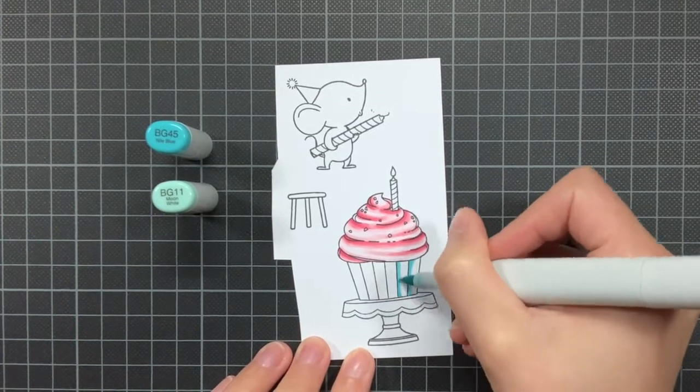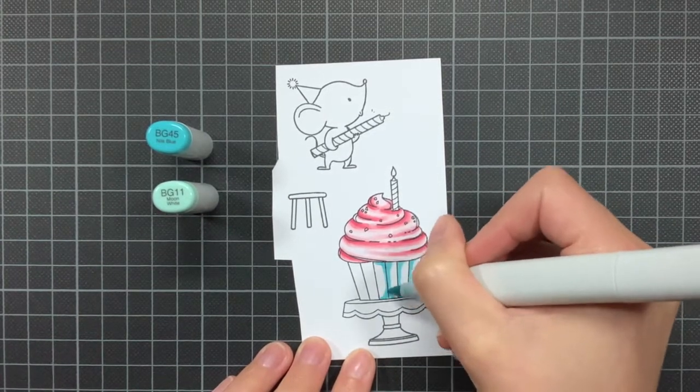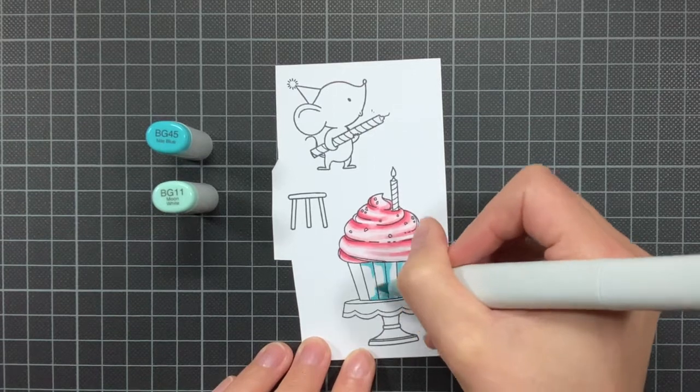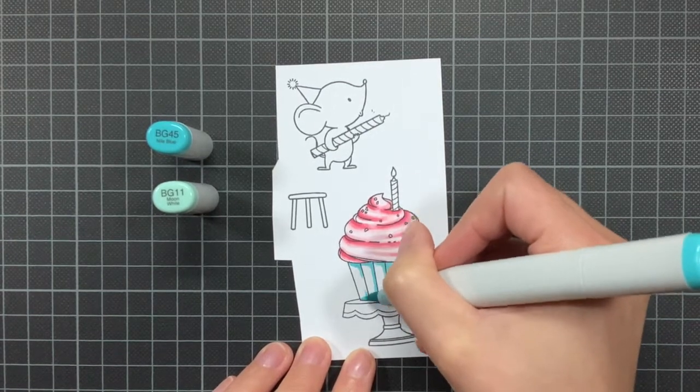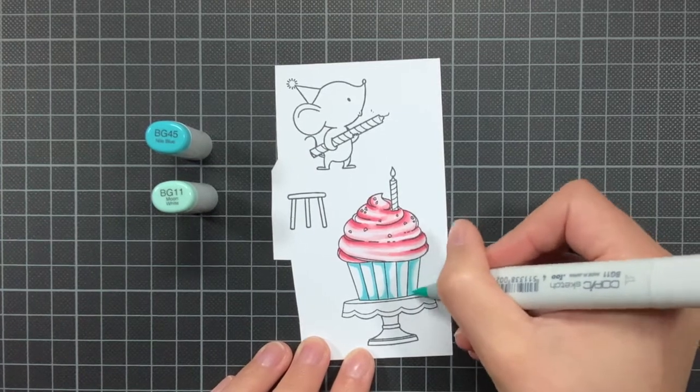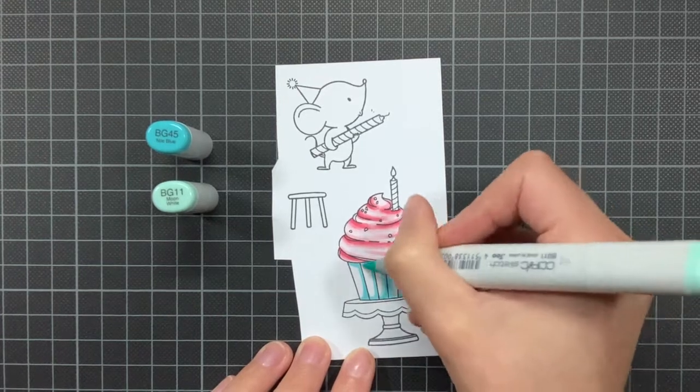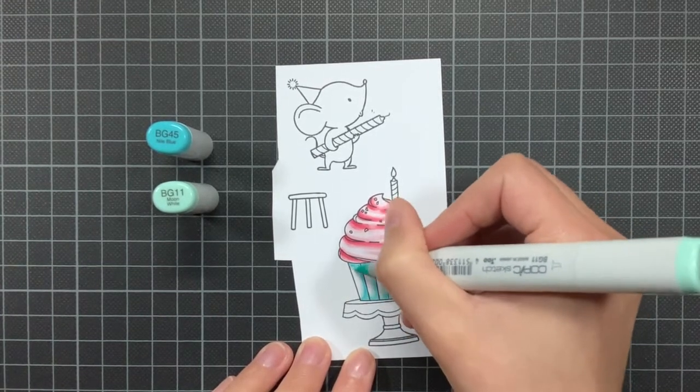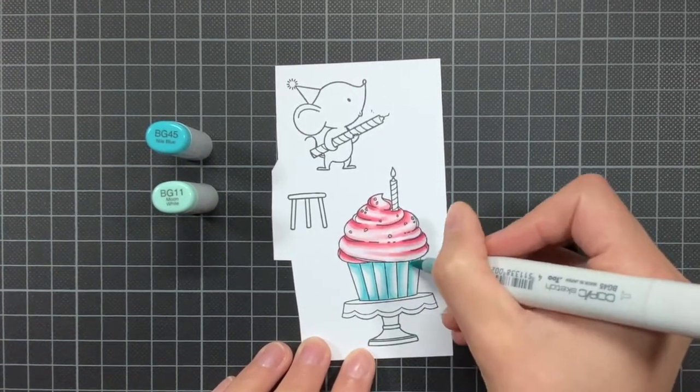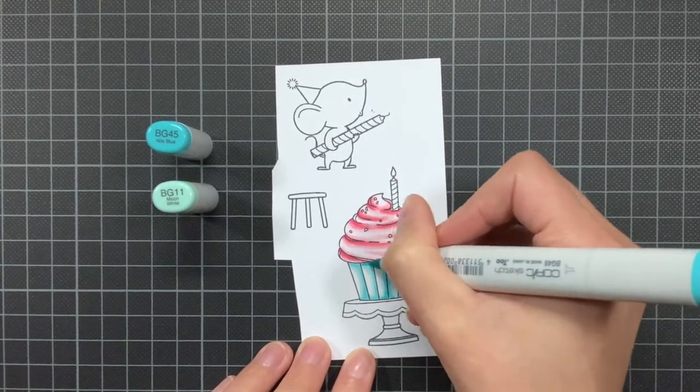Let me now demonstrate this with the wrapper for the cupcake. So first I am using the BG45, which is my darkest color, and I am using it just to one side of the little wrapper pieces. Then I go one color down, the BG11, and as you can see I am also lightly going over the area which I colored with the BG45, just to make things blend well.